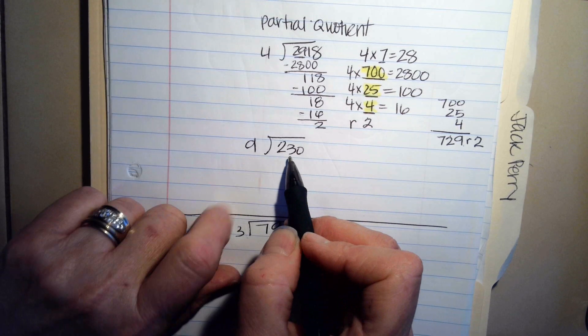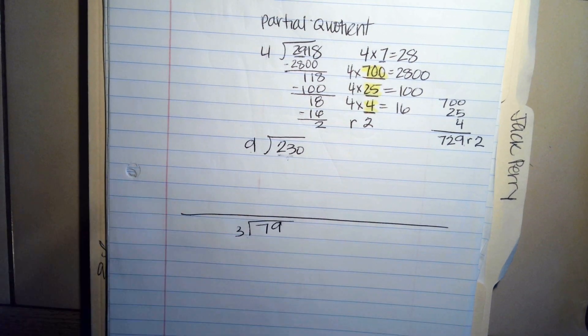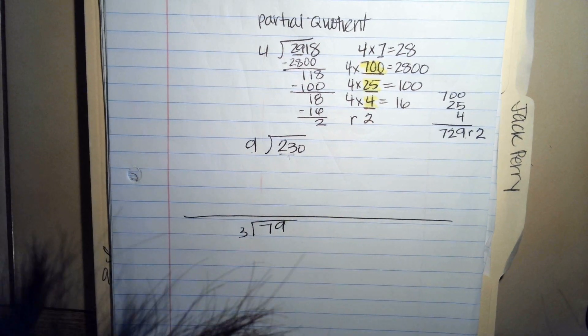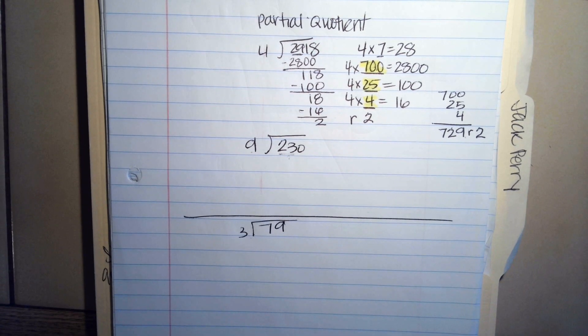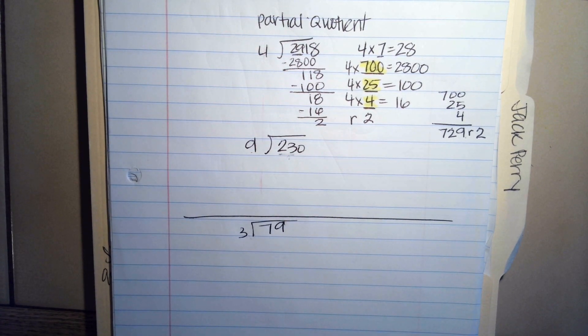How many 9s do you think fit into 230? So you're going to try to use a fact family. 9 goes into 23 or less. How many times? We can't go over, right? We have to stay under. What do you think? 18?